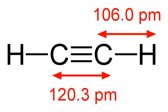Acetylene is the chemical compound with the formula C2H2. It is a hydrocarbon and the simplest alkyne. This colorless gas is widely used as a fuel and a chemical building block.